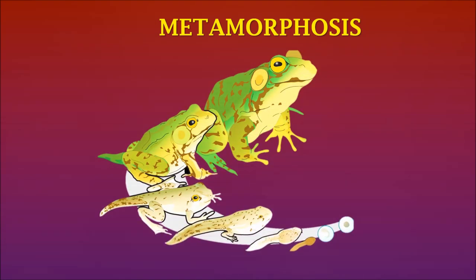Metamorphosis: This is another interesting fact that some lower-order organisms exhibit. The larvae are totally different from their parental organisms, and they further totally change into their original structure — that is known as metamorphosis. It is clearly exhibited by the frog. The larvae of the frog, known as tadpole larvae, resembles a fish and acts like a fish, but in a further process it develops into a frog. This is known as metamorphosis.